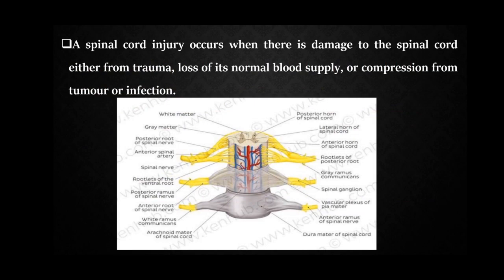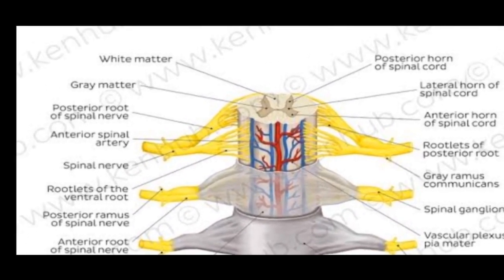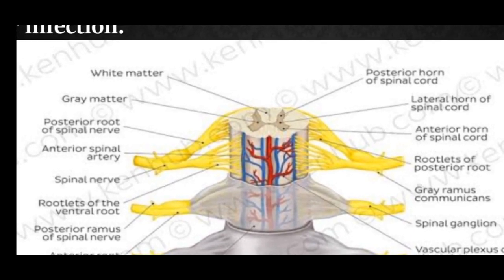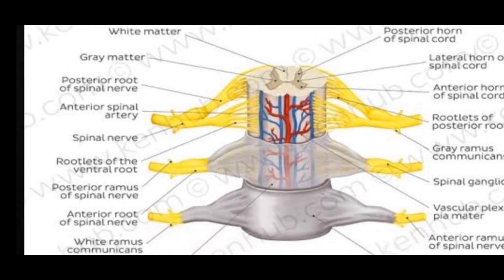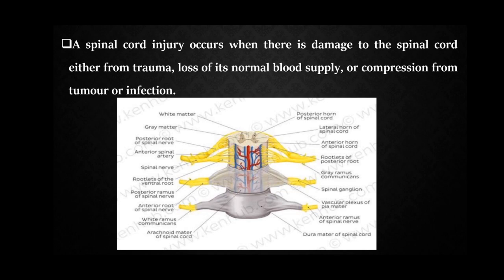Spinal cord injury occurs when there is damage to the spinal cord from trauma, vascular insult such as loss of normal blood supply, compression from a spinal tumor, or any infection. Spinal cord damage can be caused by trauma, loss of blood supply, compression from a tumor, or infection. This picture shows the anatomy of the spinal cord — we can see the posterior horn, white matter, gray matter, anterior horn, and lateral horn, the anterior spinal artery, rootlets of the posterior root, spinal ganglia, and vascular plexus. It is a cross-section of the spinal cord.